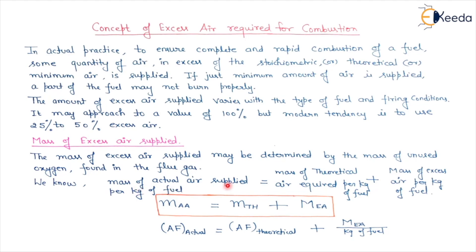The moles of actual air supplied per kg of fuel is equal to mass of theoretical air required per kg of fuel plus mass of excess air per kg of fuel. That means the actual air supplied equals theoretical air plus excess air. In terms of air fuel ratio, the actual air fuel ratio is equal to theoretical air fuel ratio plus mass of excess air per kg of fuel.